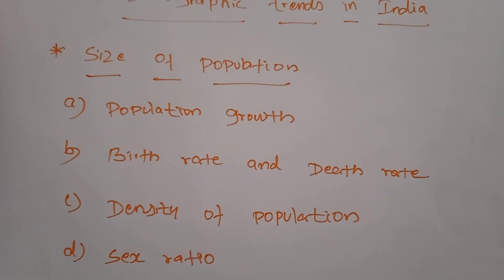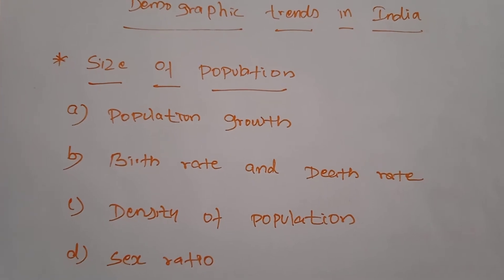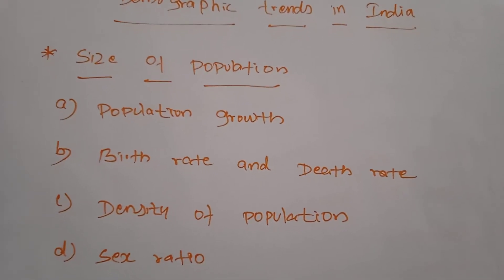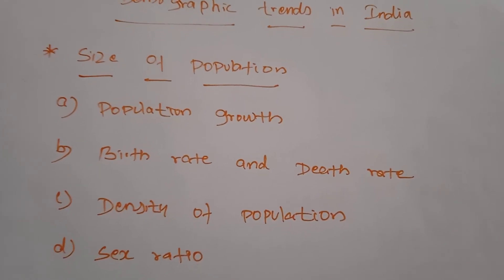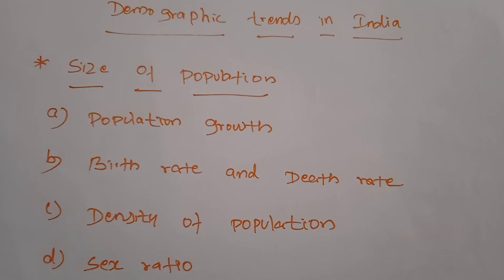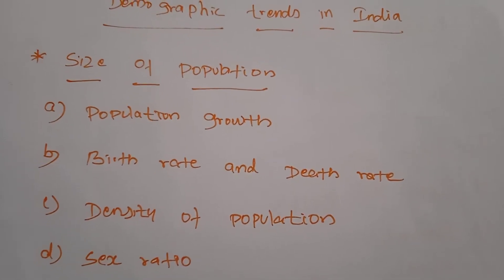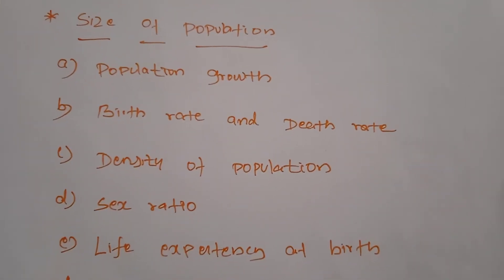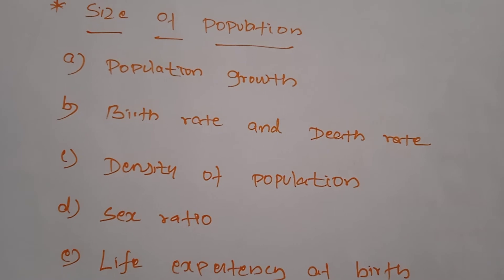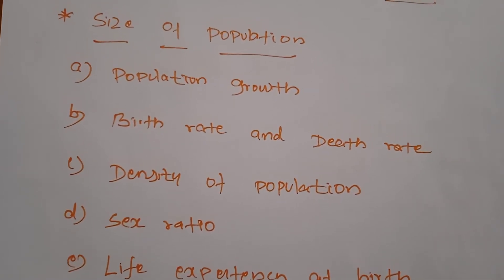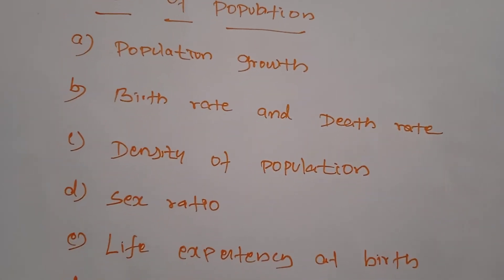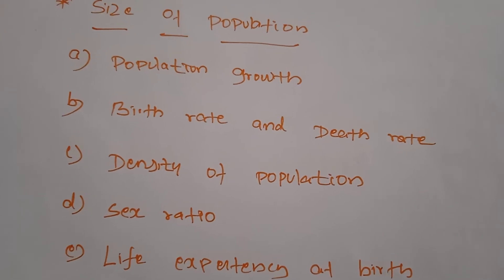Over a period of 100 years, India has quadrupled its population size. India ranks second in the world after China. India has only about 2.4% of the world's geographical area and contributes less than 1.2% of the world's income, but accommodates about 17.5% of the world's population. In other words, every 6th person in the world is an Indian.